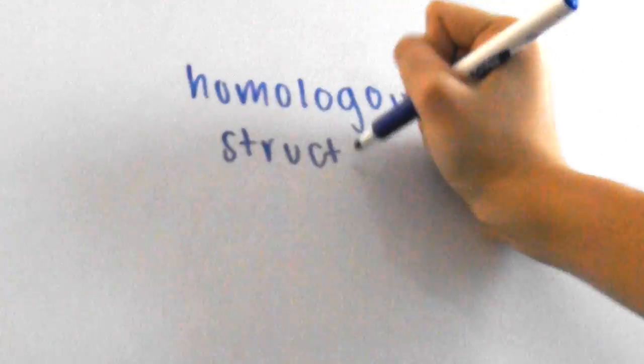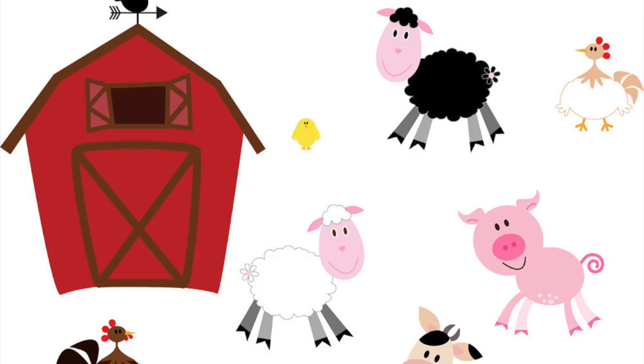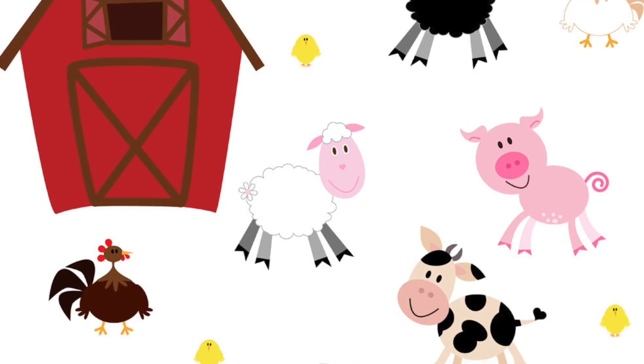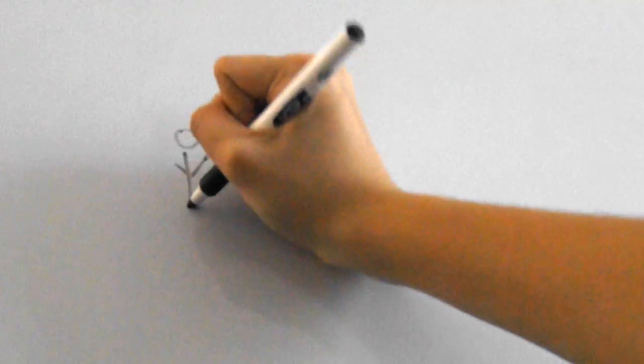Homologous structures are structures seen in multiple organisms that represent variations from a common ancestor. Let's say that the common ancestor had this arm-like structure. Over many years, through natural selection and adaptations, many different animals are thought to have arisen with variations of this arm-like structure.